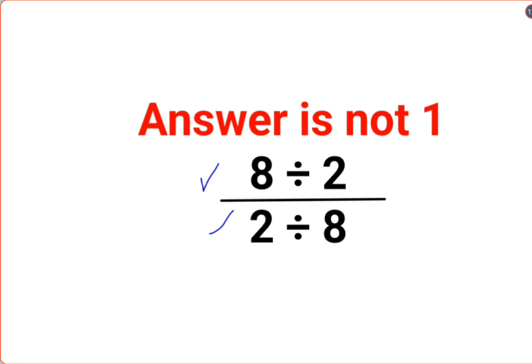So basically 8 divided by 2 is 4 divided by 2 divided by 8 which is what? 1 upon 4. Okay, now this is your final answer.